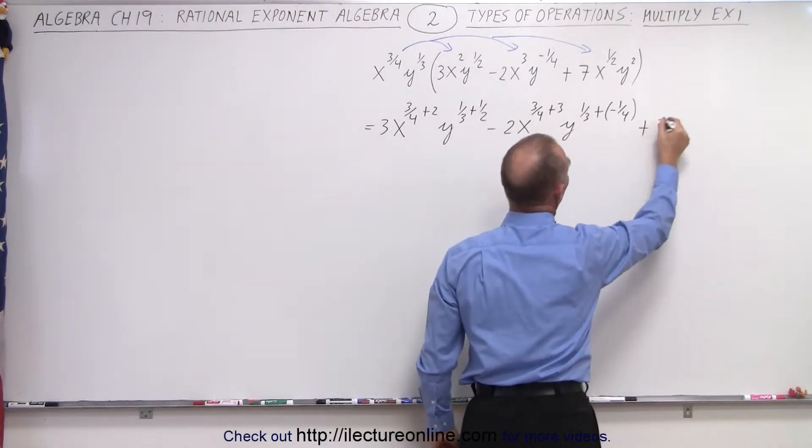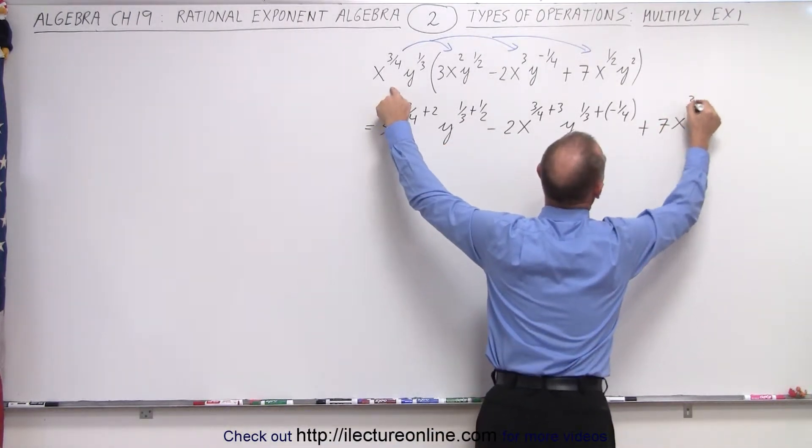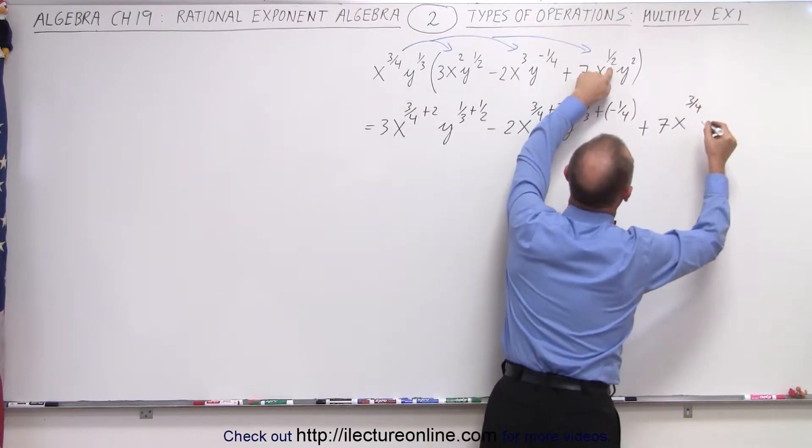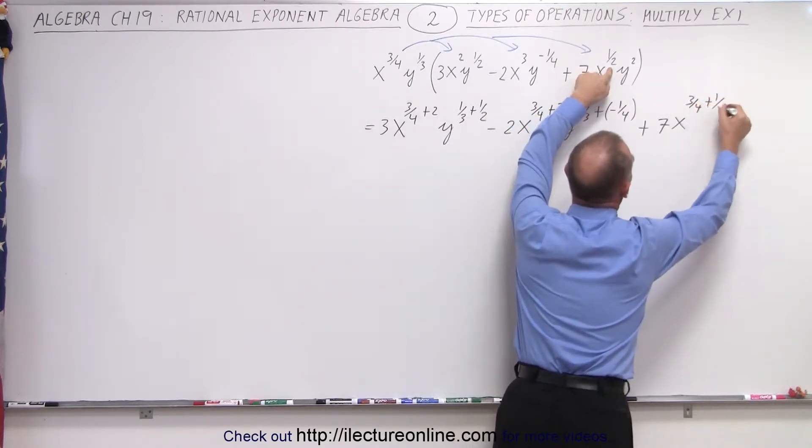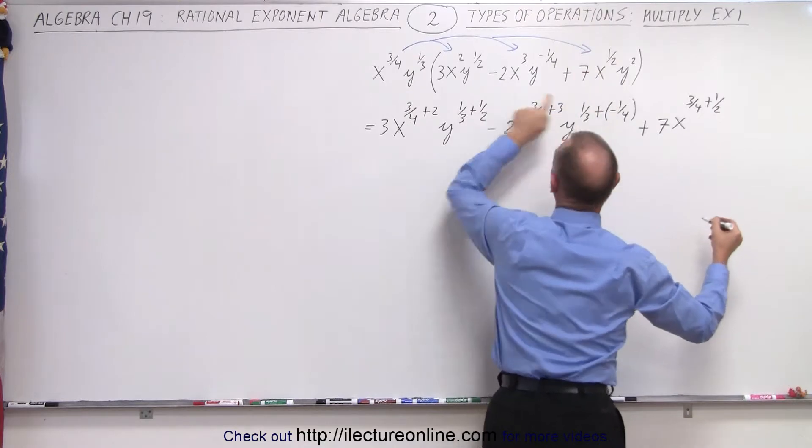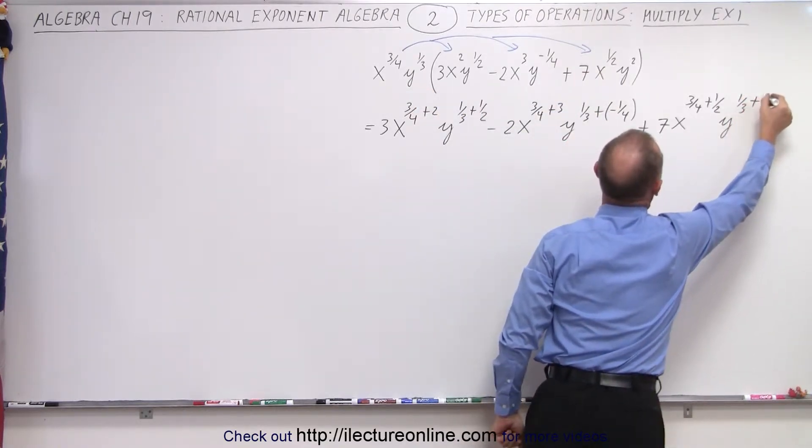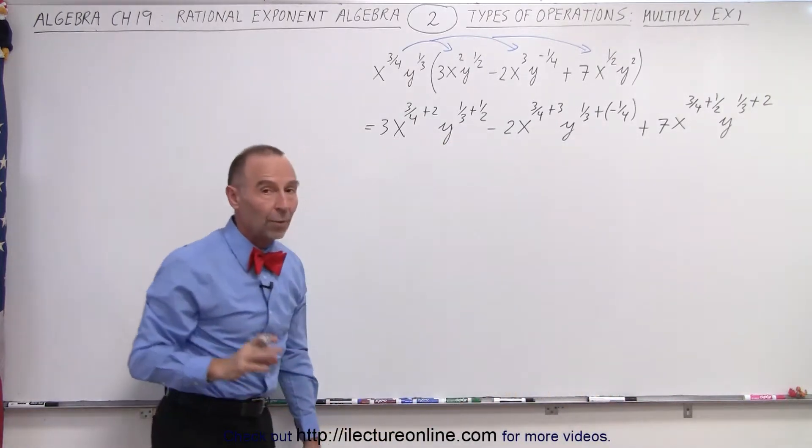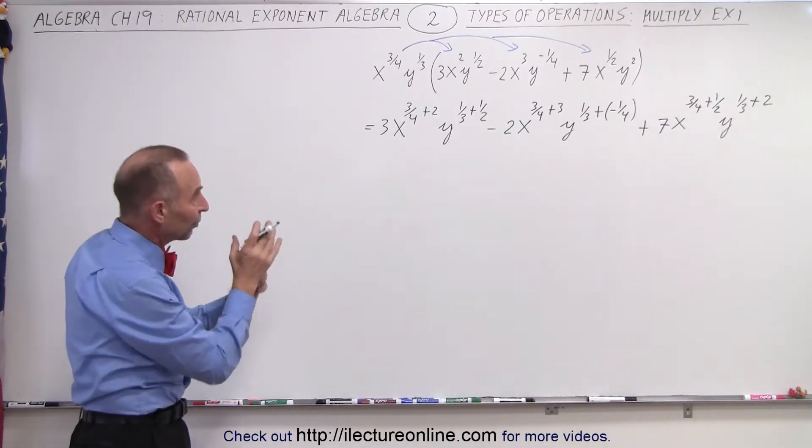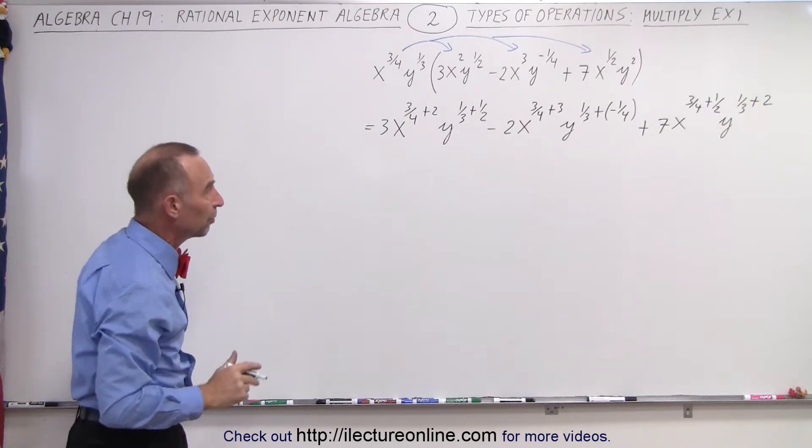And finally, plus seven times x to the three quarters, and then we have plus one half, and then we have y to the one third plus two. All right, so that's how we have it now. Once we've multiplied, we simply wrote it as a sum of the exponents.